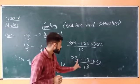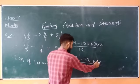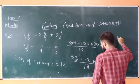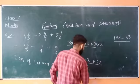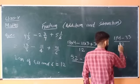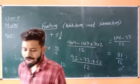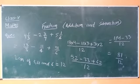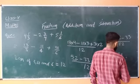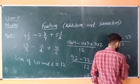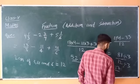Now we have 52 − 33 + 62, all over 12. According to BODMAS, firstly add the positive numbers: 52 + 62 = 114, then subtract 33. So we get 114 − 33 = 81, giving us 81 upon 12. Now 81 upon 12 is not in simplest form, so we divide both numbers by 3: 81 ÷ 3 = 27 and 12 ÷ 3 = 4. So the answer is 27 upon 4.